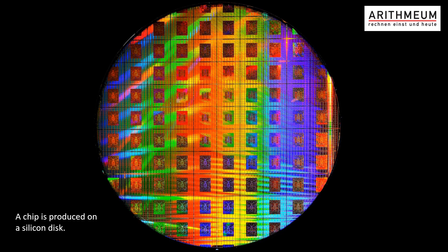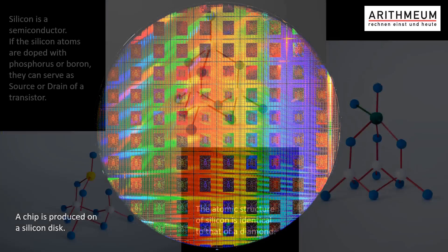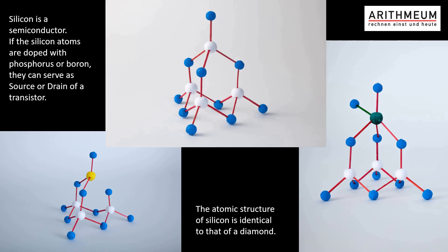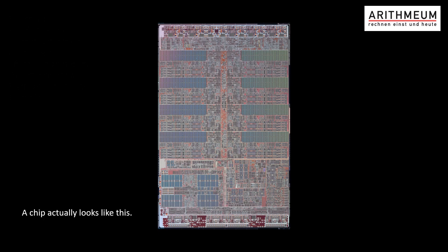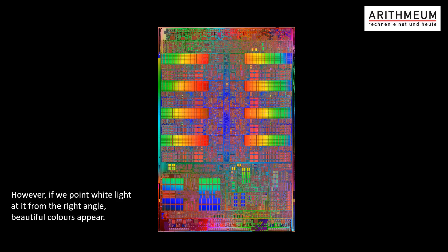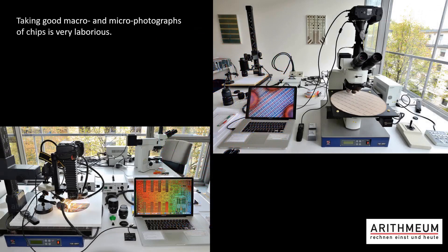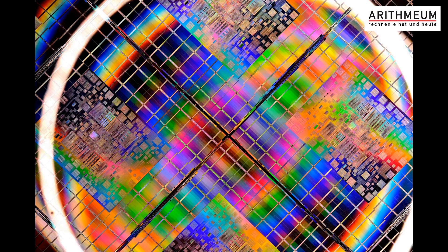Apart from design pictures and photographs of the chips, the exhibition also shows numerous manufactured wafers from the production process. The atomic structure of silicon is similar to that of a diamond. A chip usually looks grayish — that is the color of the silicon. However, if a chip is lit up sideways with white light, the diffraction of the light on the surface structure, which is only a few nanometers in size, can generate beautifully colored rainbow effects. Taking pictures like these requires a lot of technical work, but also just as much patience, accuracy, and of course an eye for the artistic aspect.